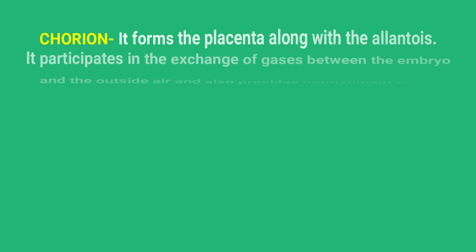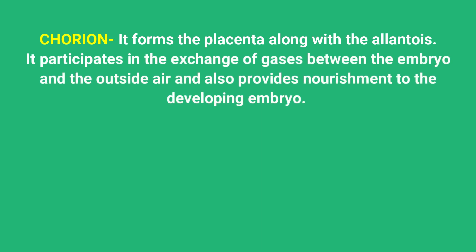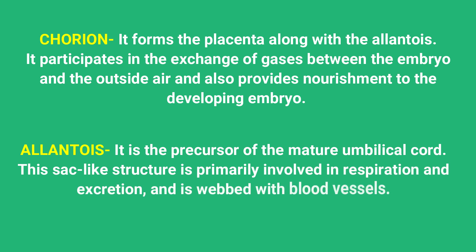The second membrane is chorion. It forms the placenta along with the allantois. It participates in the exchange of gases between the embryo and the outside air, and also provides nourishment to the developing embryo. The third membrane is allantois. It is the precursor of the mature umbilical cord. This sac-like structure is primarily involved in respiration and excretion, and is webbed with blood vessels.